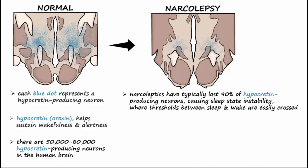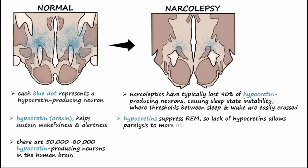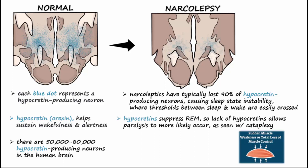Hypocretin also suppresses REM, so lack of hypocretin allows paralysis to more likely occur, as seen with cataplexy. Hypocretins have also been shown to influence feeding, addiction, and other behaviors.